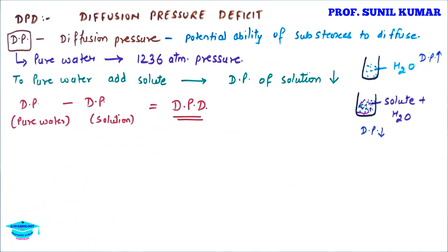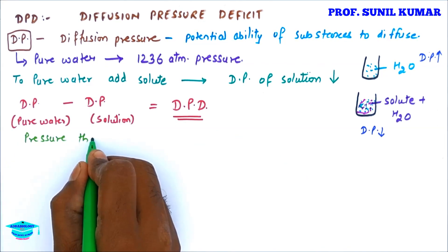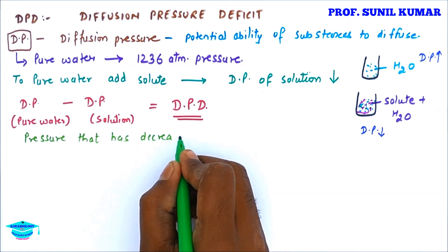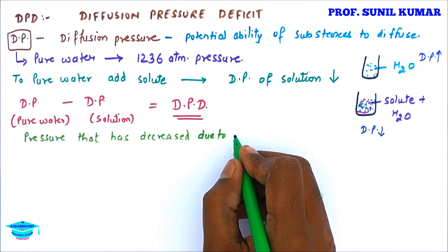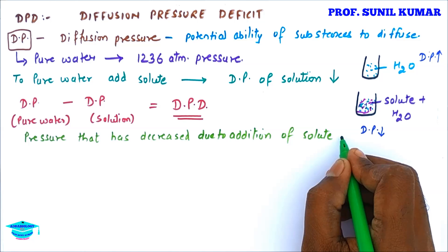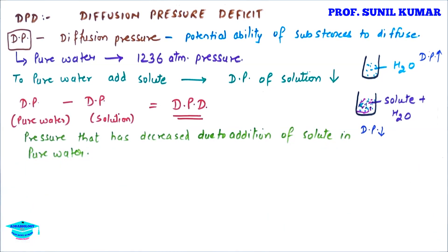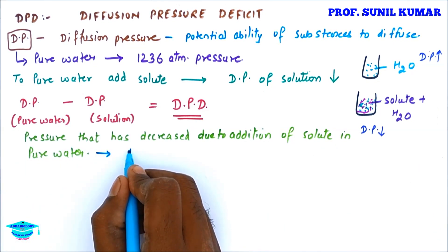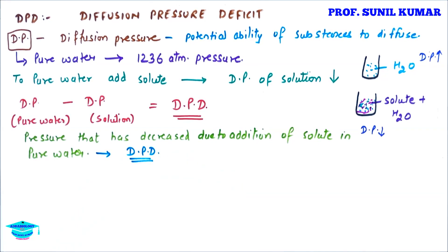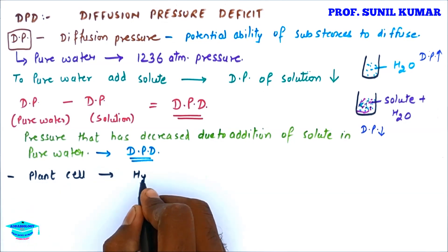So: Diffusion Pressure of pure water minus Diffusion Pressure of solution equals DPD — that is Diffusion Pressure Deficit — the deficiency of diffusion pressure in the solution. We can say that the pressure that has decreased due to the addition of solute in pure water is what DPD is. Very simple to understand.